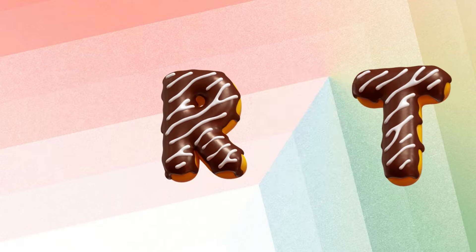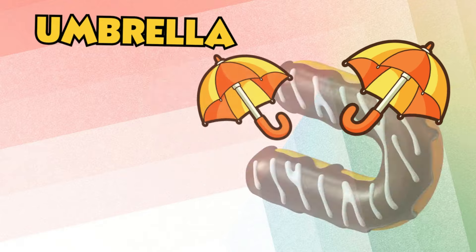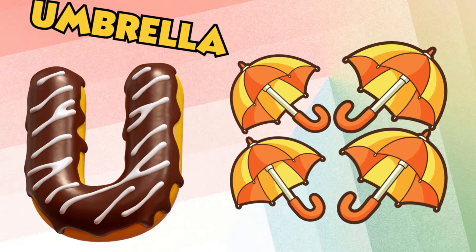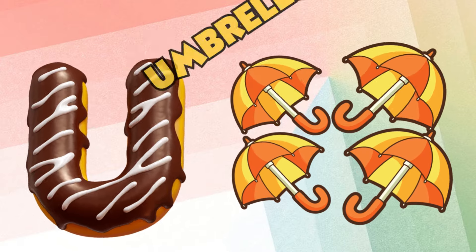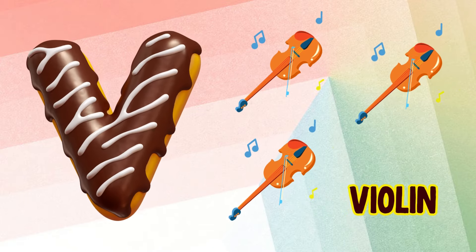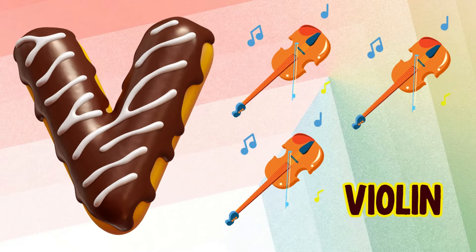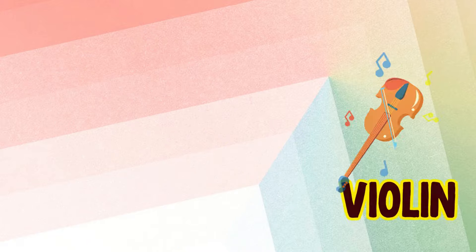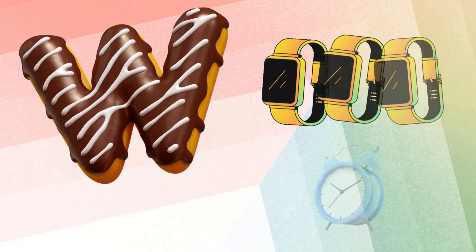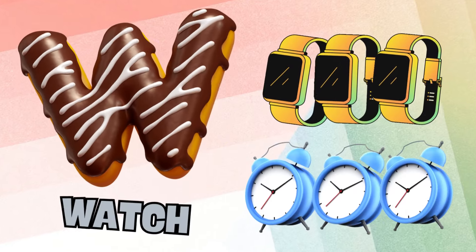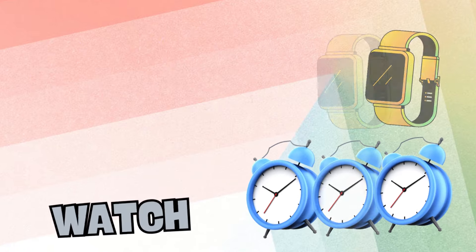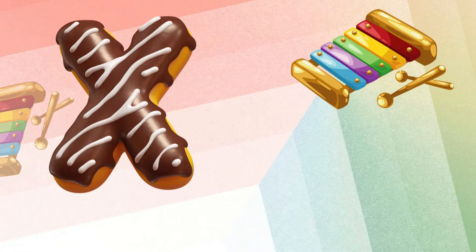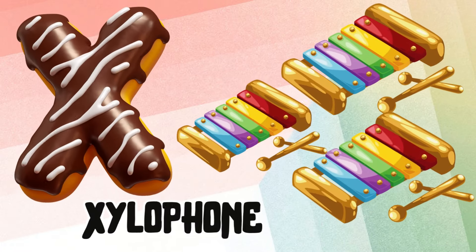U is for umbrella, u-u-umbrella. V is for violin, v-v-violin. W is for watch, w-w-watch. X is for xylophone,